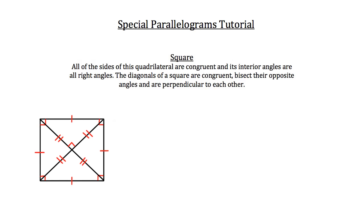The first is the square. With a square, all of the sides of this quadrilateral are congruent, and its interior angles are all right angles. The diagonals of a square are congruent, they bisect their opposite angles, and they're perpendicular to each other.